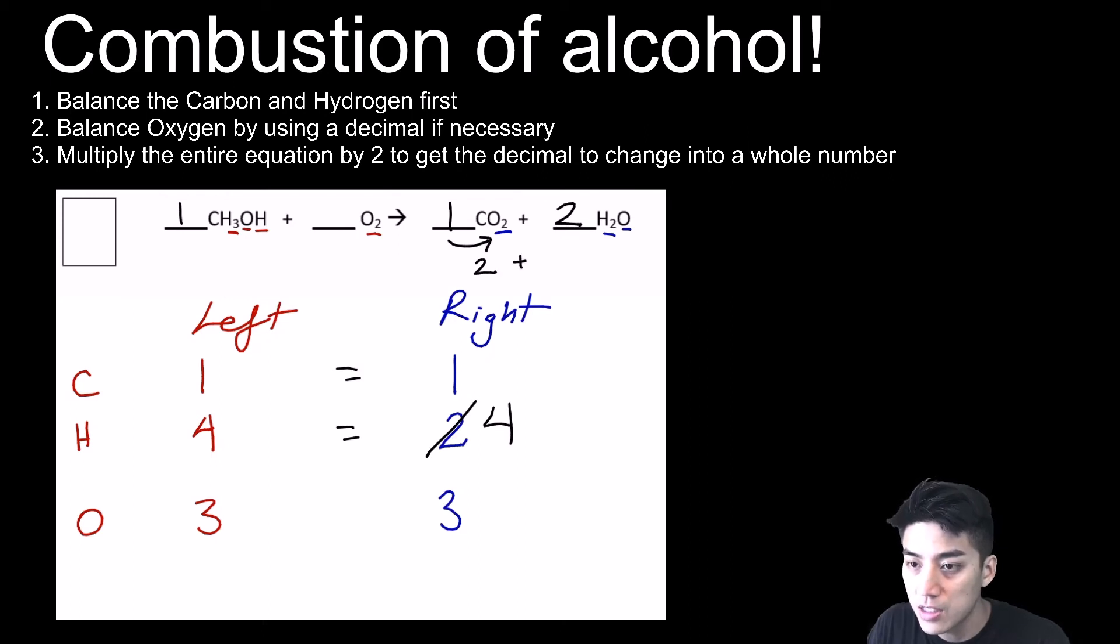Now count up our oxygens. This is one times two plus two times one, so we've got four oxygens on the right-hand side. Remember, this methanol compound already has one oxygen in it. So ask yourself, one plus what number would give me four? It would be three. Now ask yourself, what times two would give me three? That answer is 1.5.